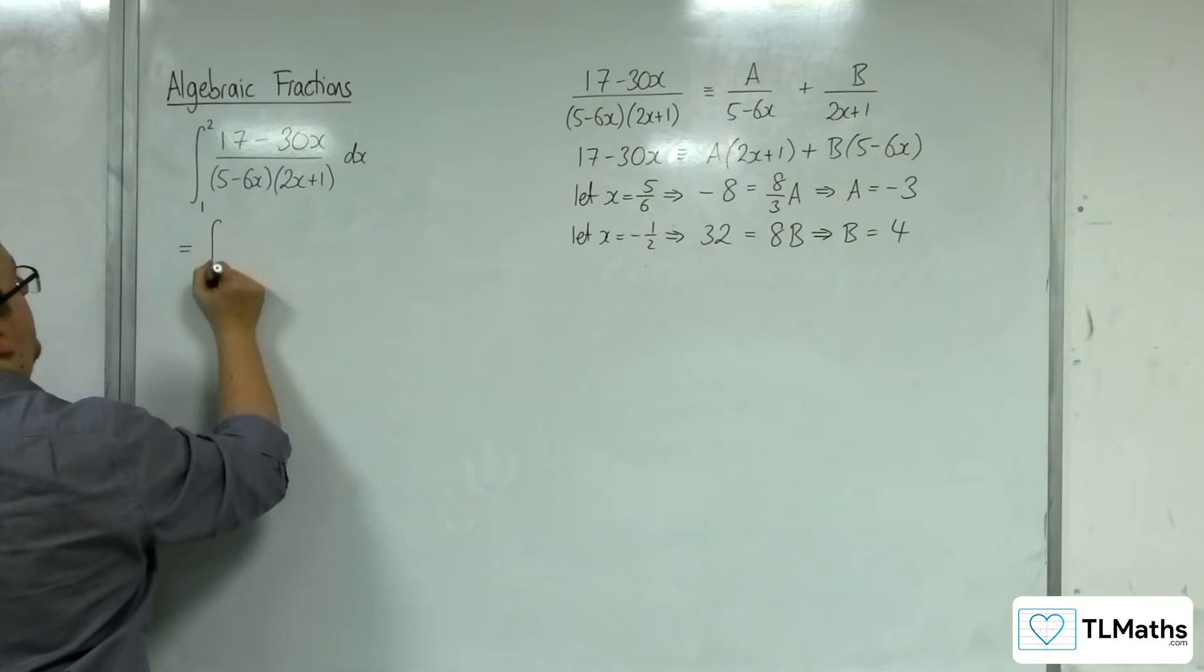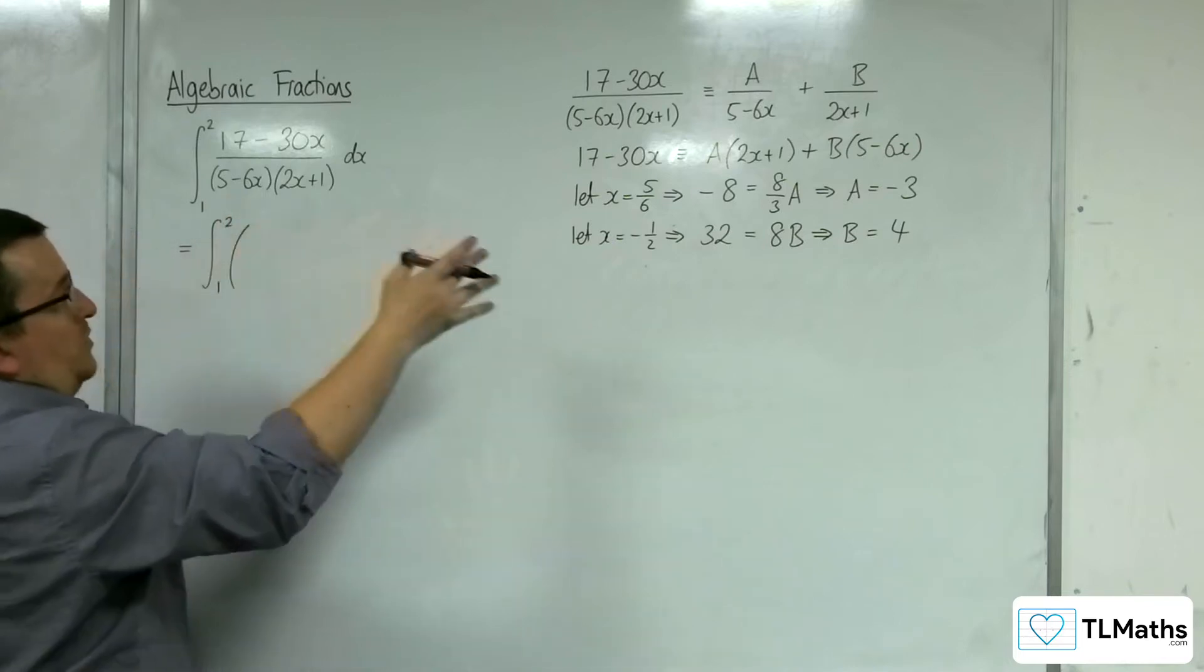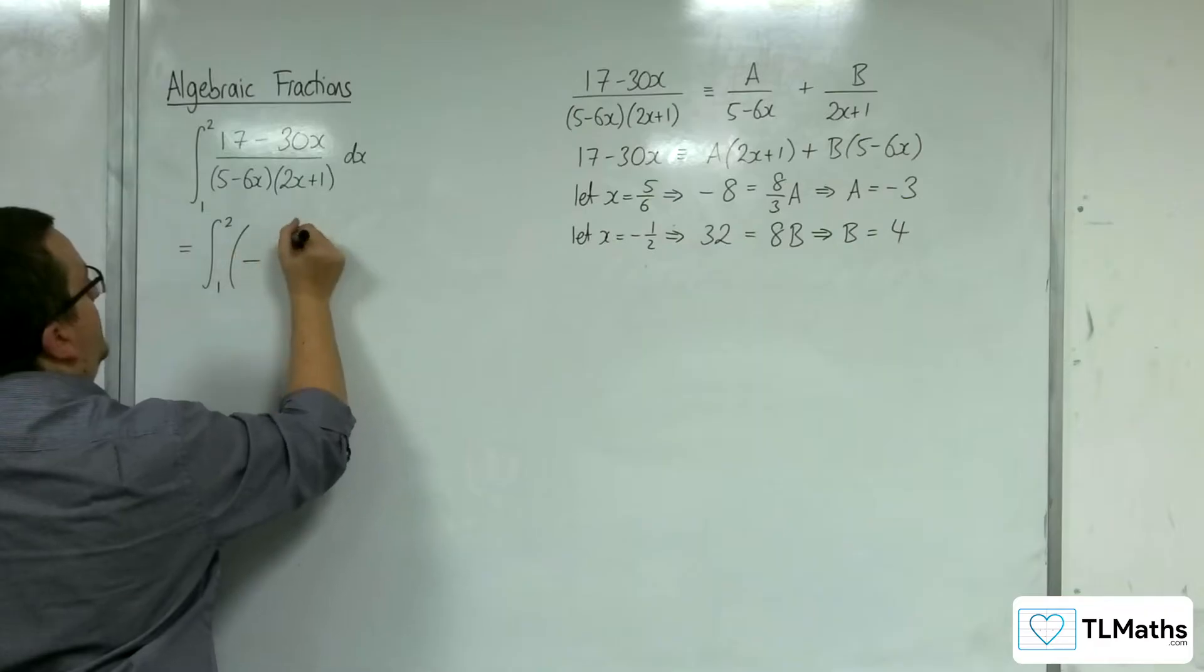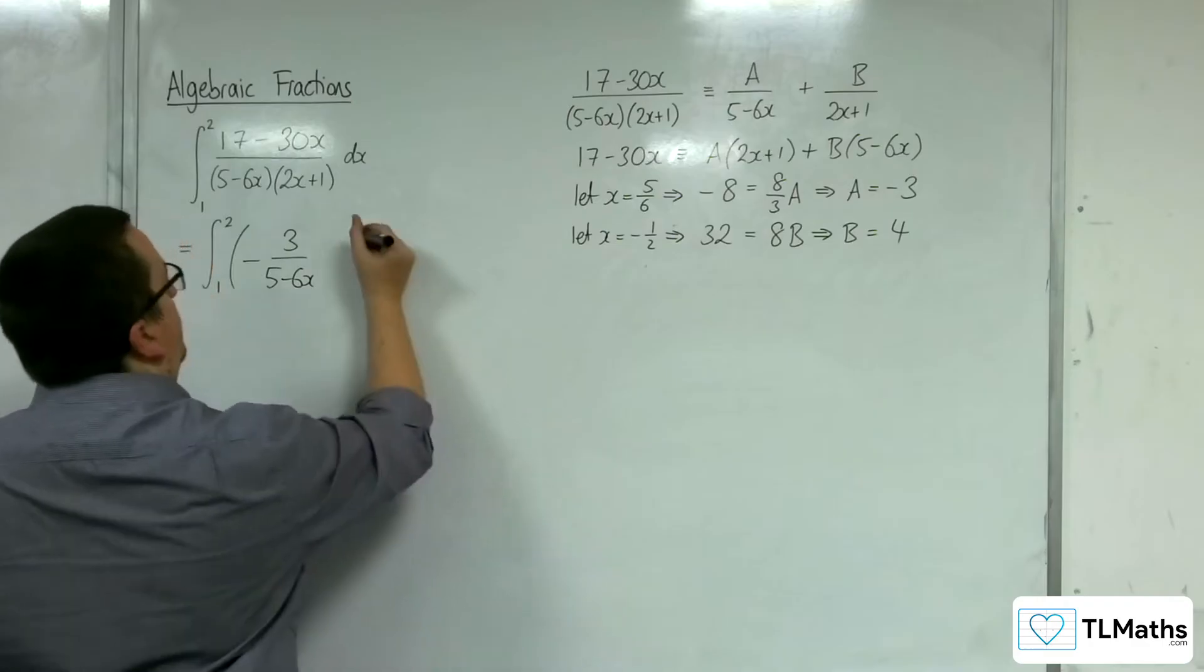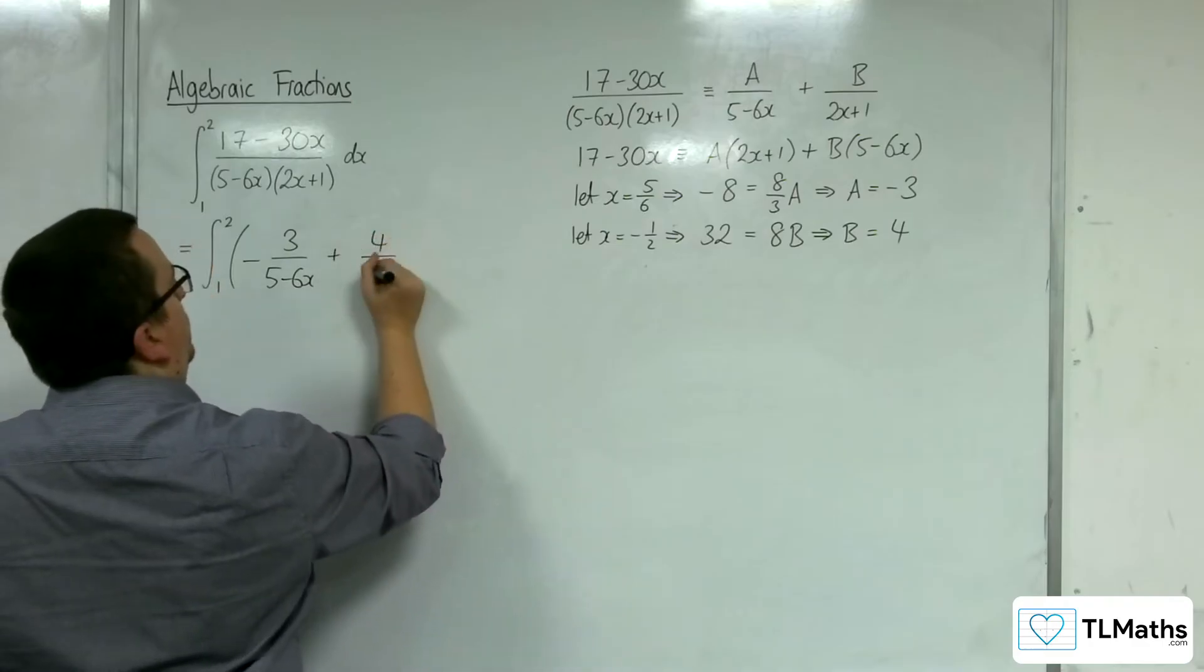So, we can break this apart into a, which is minus 3, so negative 3 over 5 takes 6x, and 4 over 2x plus 1.